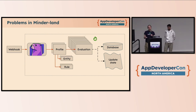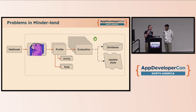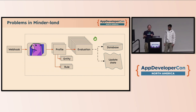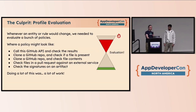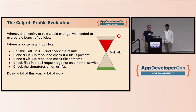Then things get a little bigger and people start to have multiple profiles applying to multiple entities. Each profile has multiple rules, and pretty soon the set of evaluations that needs to happen when that webhook comes in gets really big. The webhook times out, and then GitHub says you didn't answer and sends us another notification. That was clearly not good, so we needed to handle those webhooks faster.